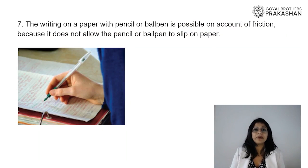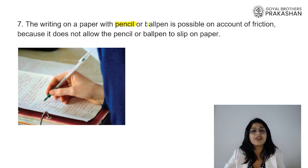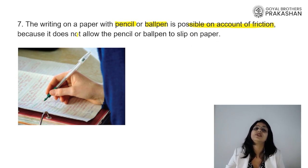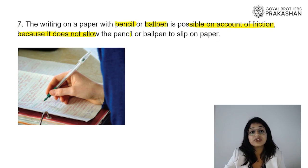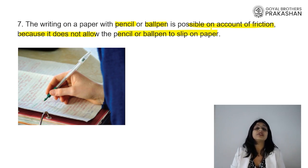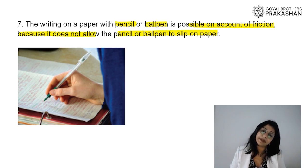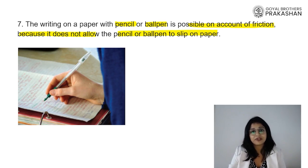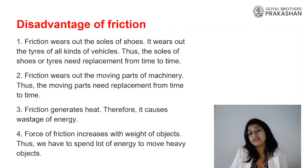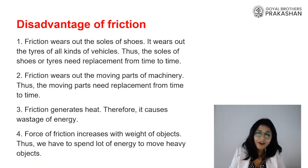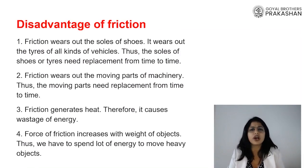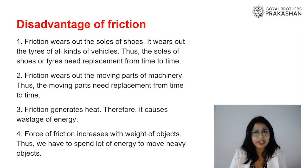Writing on paper is also a consequence of friction. It is impossible to write with a pencil or ballpoint pen without friction, because friction prevents the pencil or pen from slipping on the paper. Without friction we would neither be able to walk nor write. So friction is very important, but like every coin it has two faces — alongside advantages, it also has disadvantages.